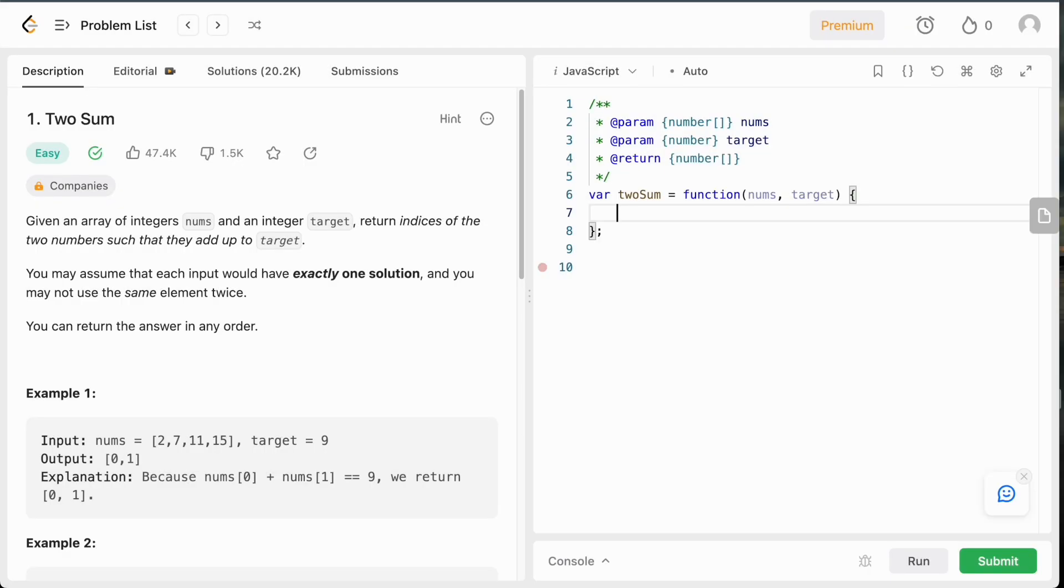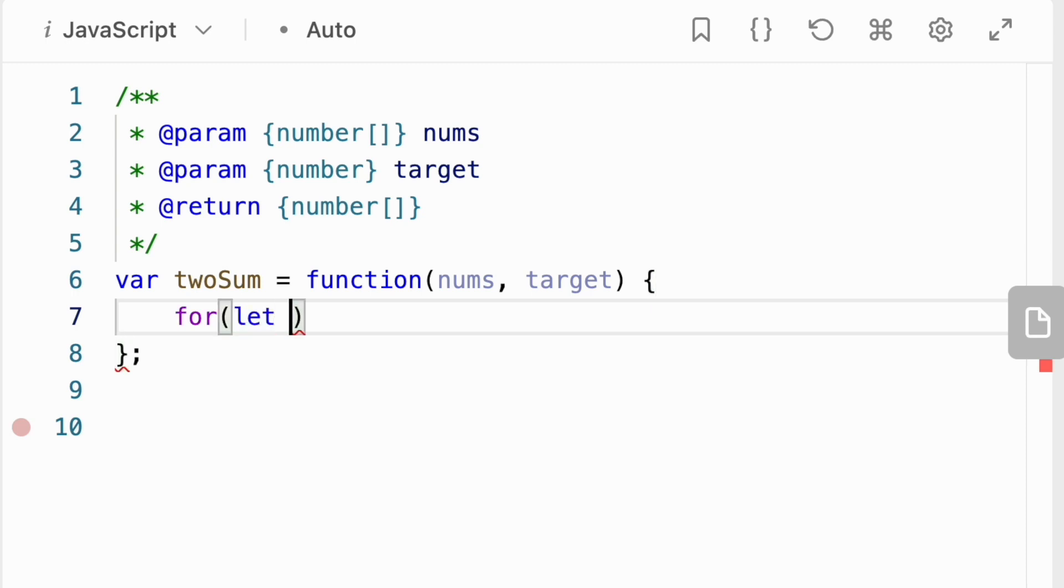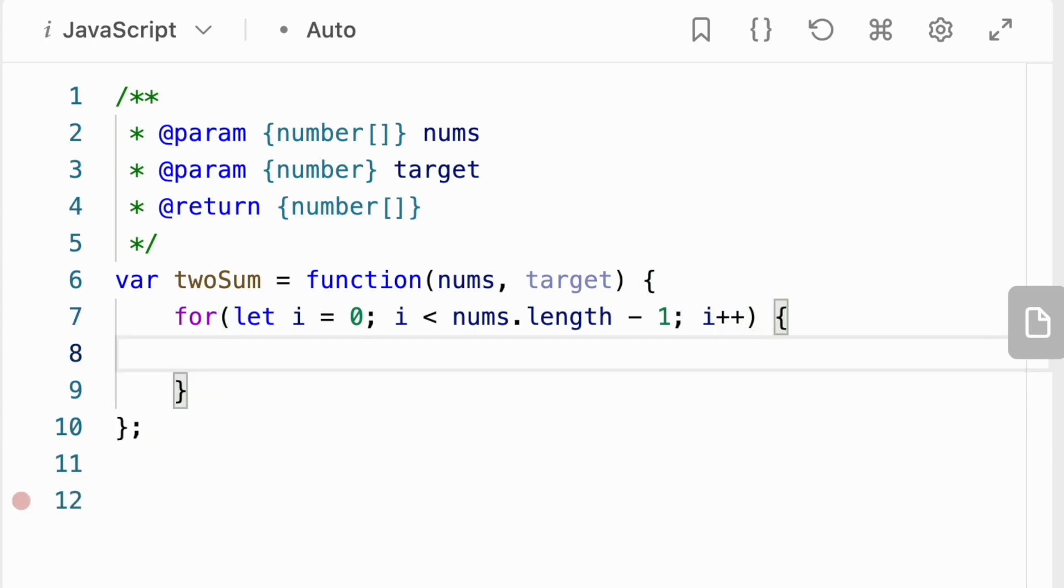In this brute force solution we will have 2 nested loops. The outer loop iterates through each element in the array. So this is our pointer 1. And our inner loop checks every element after the current outer loop element, which will be our pointer 2.